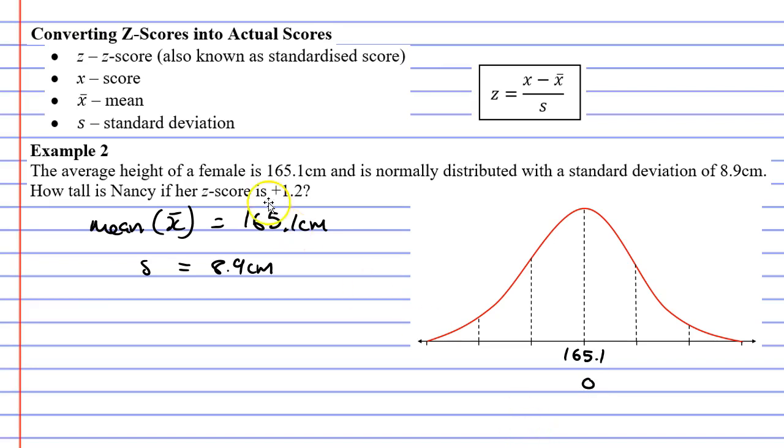Now if I keep adding our standard deviation of 8.9, it's a little complicated but I've already done the working out here to the side of me. If I add it once, I get 174 cm, that's a z-score of positive 1. If I add it again, I get 182.9, which is a z-score of positive 2.